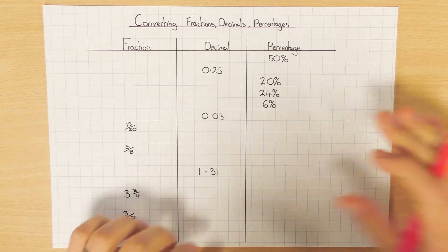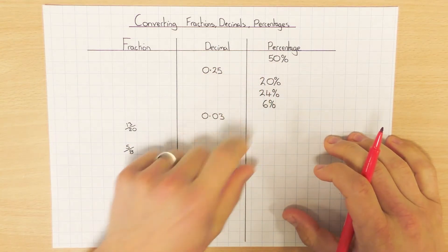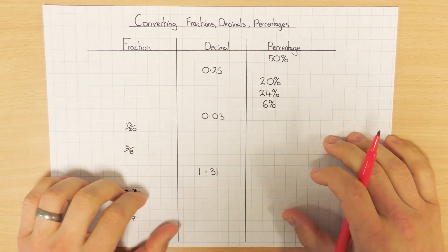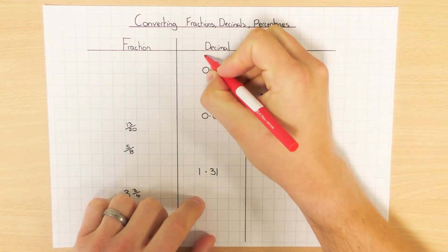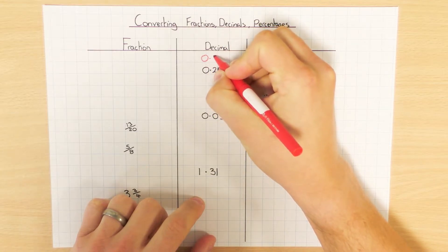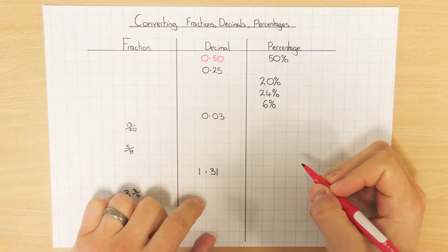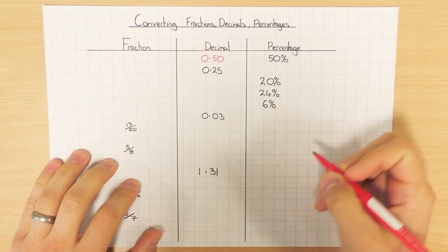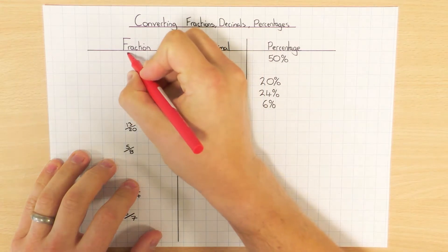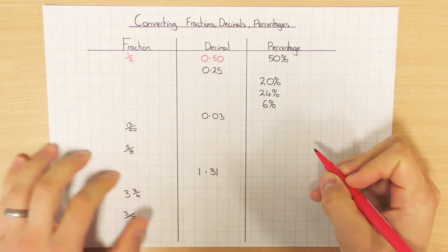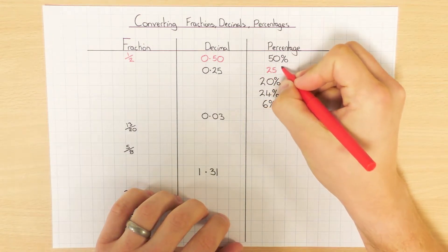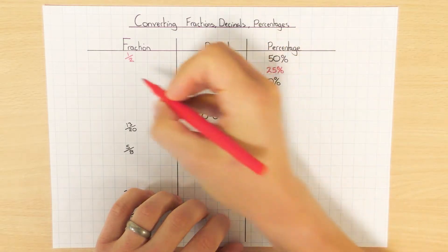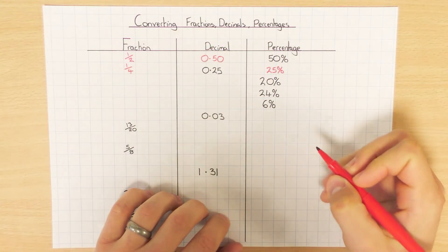With the first couple we've got here, these are ones that you should just know off the top of your head. For example, we've got 50% here. Hopefully you should know that is 0.5 or 0.50 — probably 0.5 would be the better one to use there. And obviously 50% as a fraction you should know is a half. Same with 0.25 — should know that's 25%, and as a fraction, one quarter.